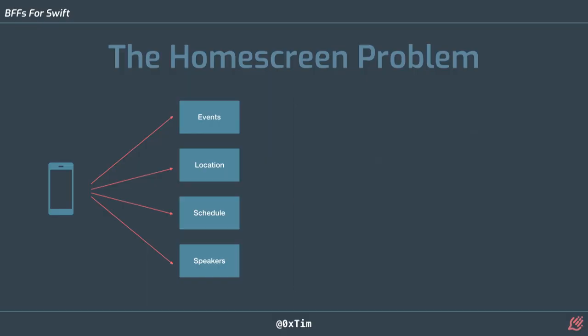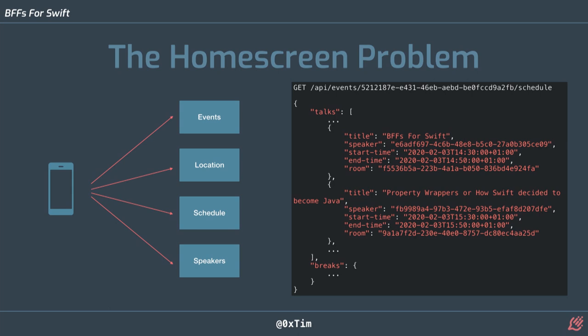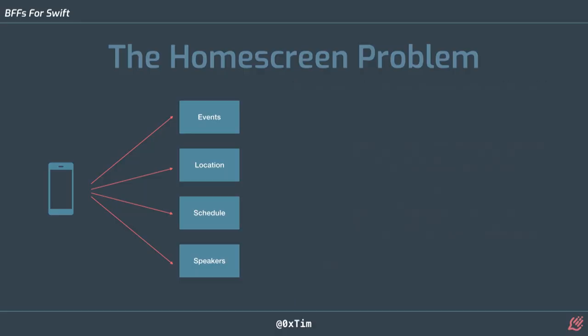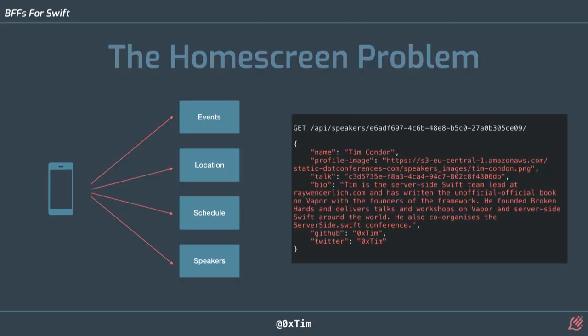To find the talk that's currently on or coming up next, we make a request to the schedule API for that conference. This gives us an array of talks, and we have to loop through each one to find which is currently on or going to be on next. The speaker is just an ID string, because that speaker might be talking at lots of different conferences or doing a workshop and a talk. So we then have to make a request to the speaker API to get information for that speaker. We get the name — which is all we want — but we also get the profile image, biography, GitHub and Twitter handles, all information we're not going to use.